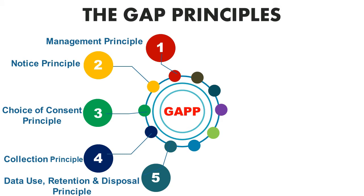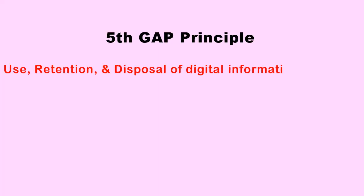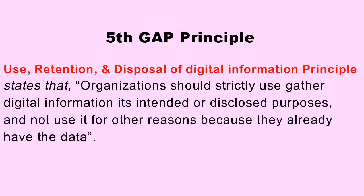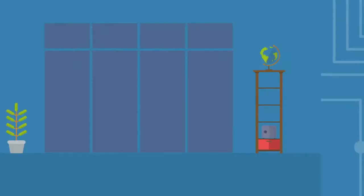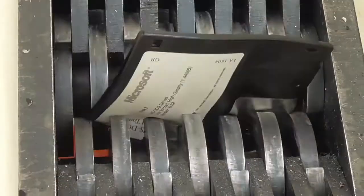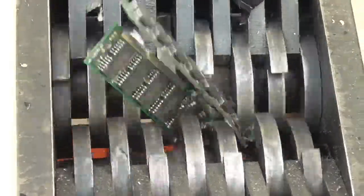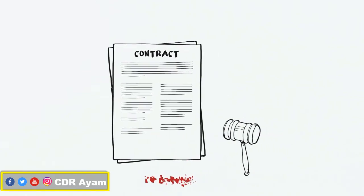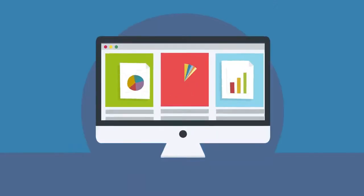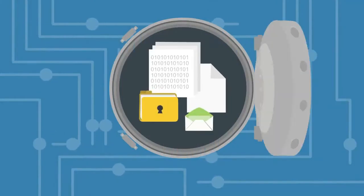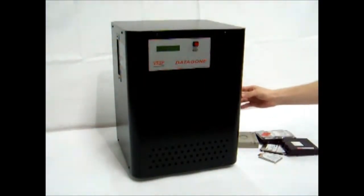The fifth GAPP principle is Use, Retention, and Disposal of digital information. This principle dictates that all gathered digital information should be used only for its intended purposes and not for any undisclosed purposes. Additionally, organizations are required to securely dispose of gathered digital information as soon as there is no more use for the intended purposes. An organization that uses your information for undisclosed purposes or retains it rather than disposing of it securely is in violation of this principle.